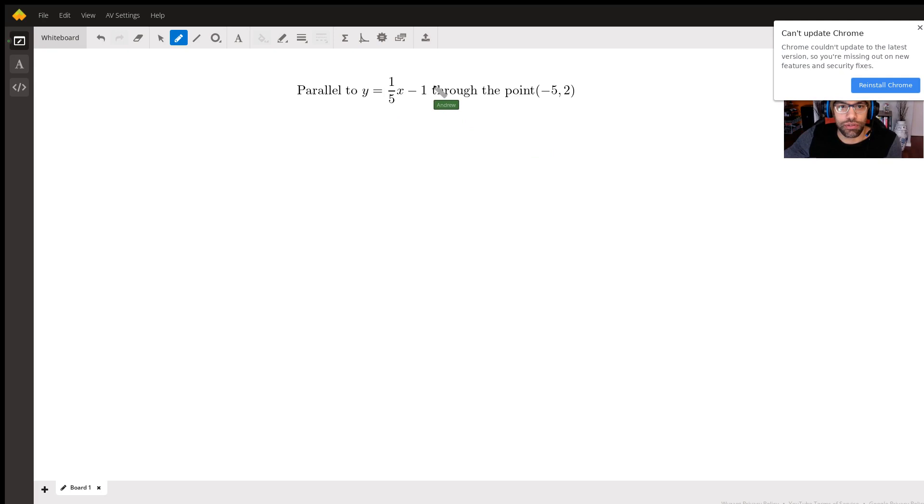We were asked to write the slope intercept form of a function of a line that's parallel to this line here, y equals one-fifth x minus one, through the point negative five two.